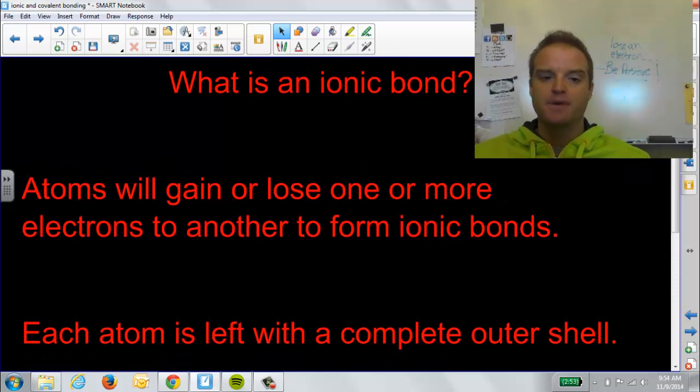First, what is an ionic bond? An ionic bond happens when atoms gain or lose one or more electrons to another to form an ionic bond. So, we're losing or gaining electrons, and that change in charge causes us to come together. When they have that positive or negative charge, remember, going back to electricity, opposites attract. They want to attract to each other.